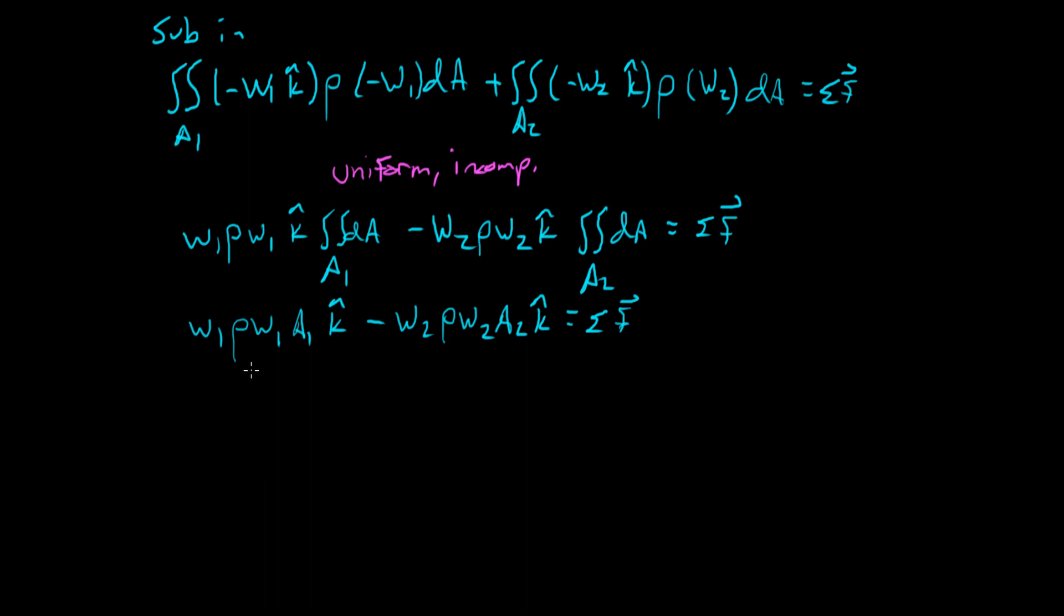Once again, we can notice that all of this business is just M dot 1. We can notice that this business here is M dot 2. And the conservation of mass can be applied real quick here by making those equal. It's not saying that they're equal to 0. It's just they're equal to each other. And so we can sub that in as just W1 M dot times K hat minus W2 times M dot K hat equals sum of forces.